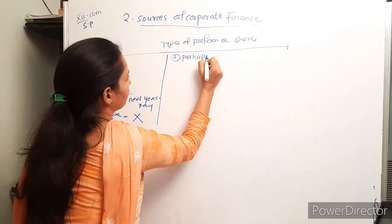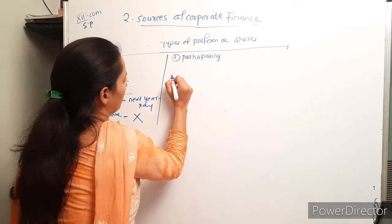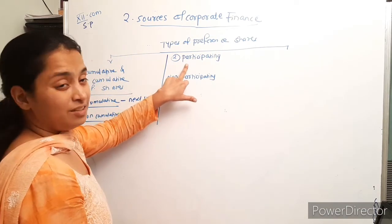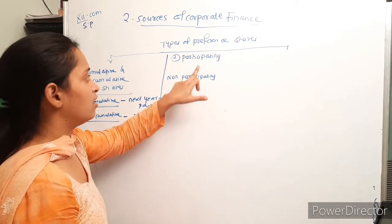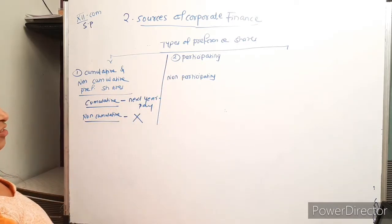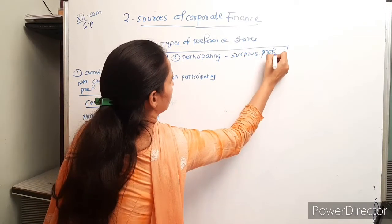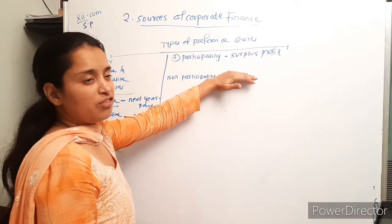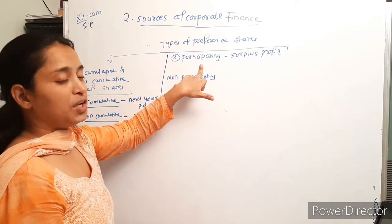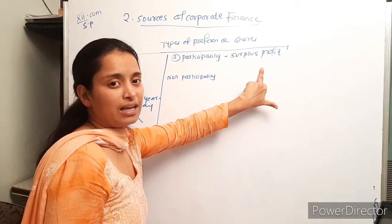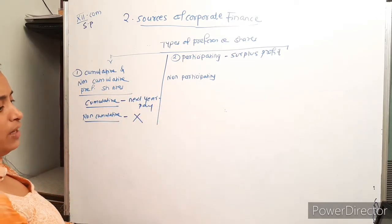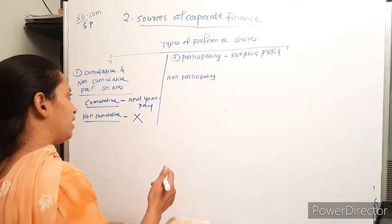The second type is participating and non-participating preference shares. Participating preference shareholders are entitled to participate in the surplus profit of the company beyond their fixed dividend.